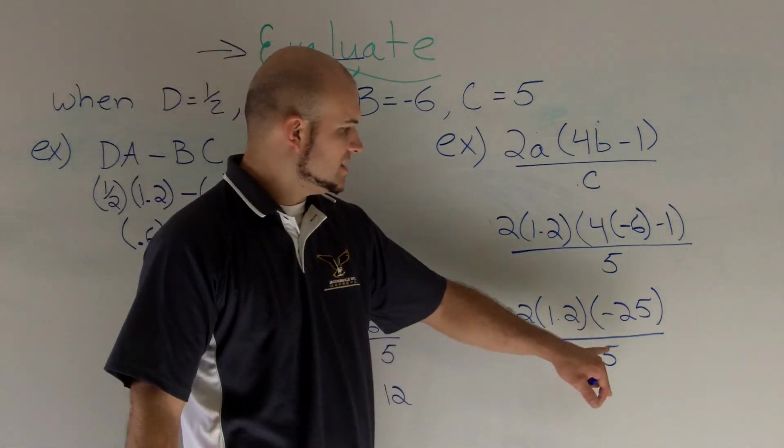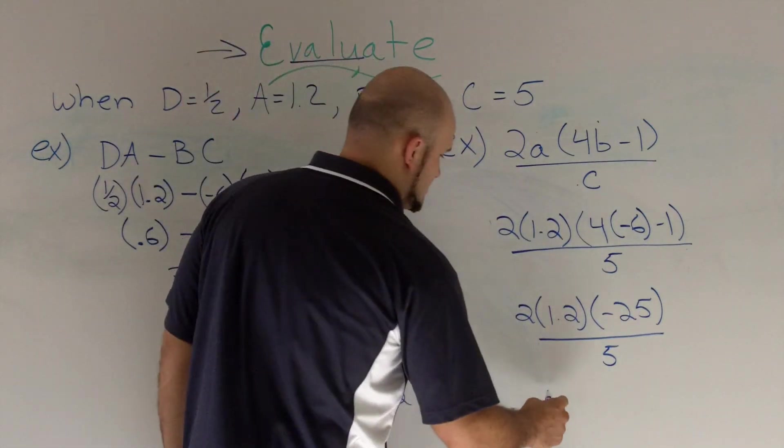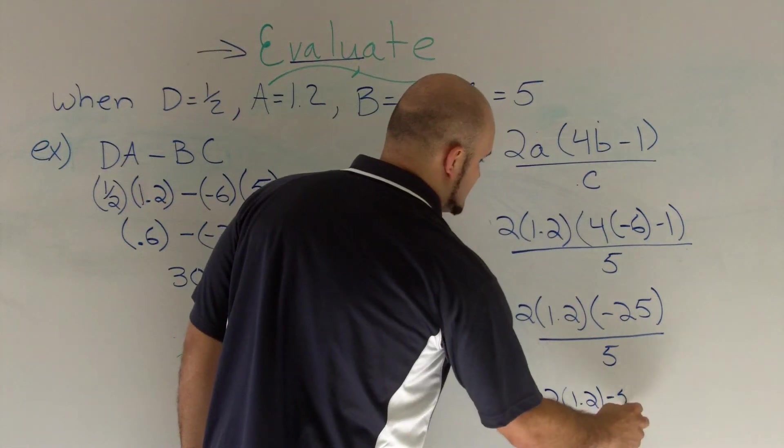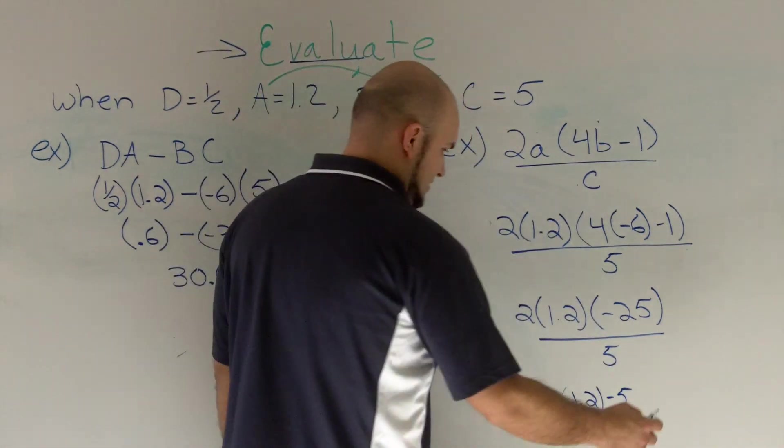The other way you could also do this is also notice I know that 5 wasn't a negative 25, negative 5 times. So you could also do 2 times 1.2 times a negative 5. And then when I multiply that across I also get 12.